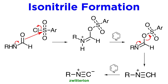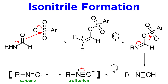Isonitriles can be represented two different ways. Starting with the zwitterion, if one of the pi bonds in the triple bond is given to the nitrogen, this will neutralize both atoms, leaving us with a carbene. Since these are both simply resonance structures, recall that the reality lies somewhere in between.